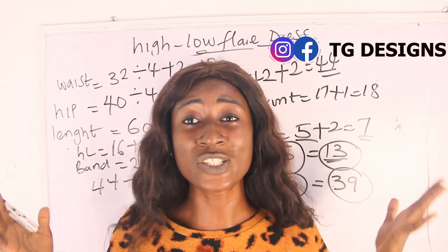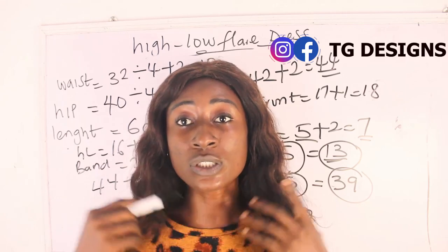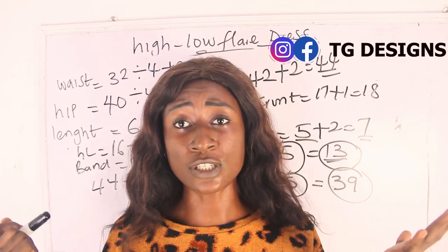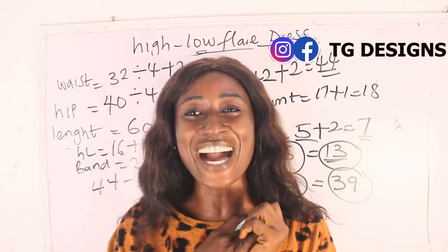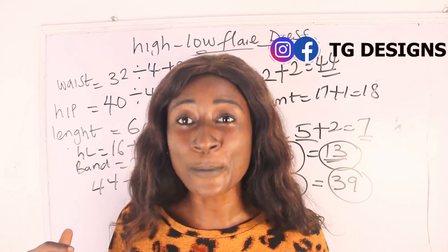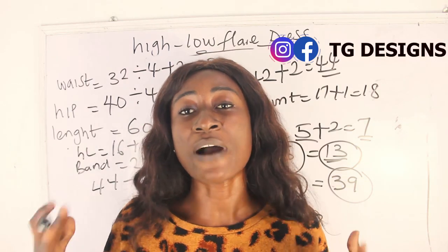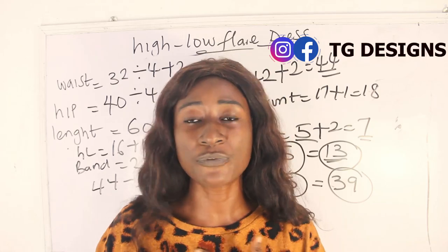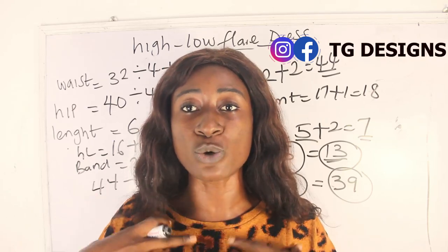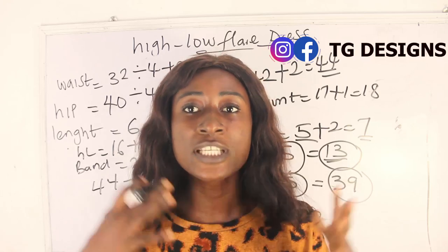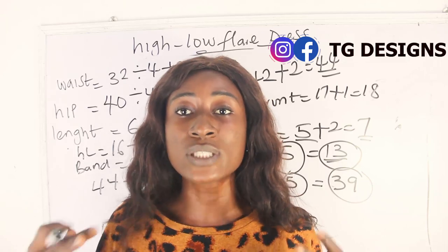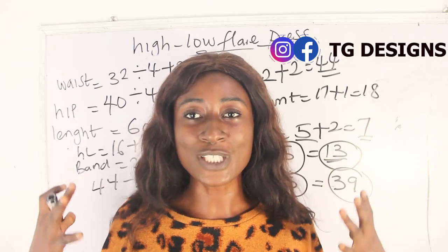These are the basic measurements required to achieve your high-low dress. Find us on Instagram and Facebook at TG Designs — we have amazing fashion illustrations on our website, all details in the description box. For this style, you can use any fabric — African prints, crepe, chiffon. I used six yards of African prints; calculate yours based on your fabric amount and size.